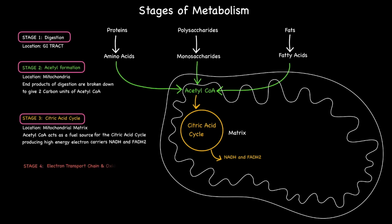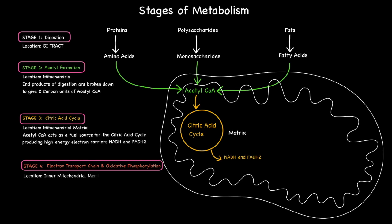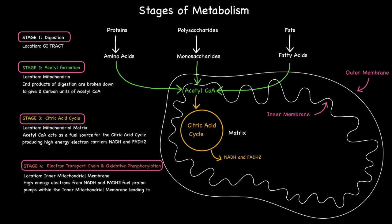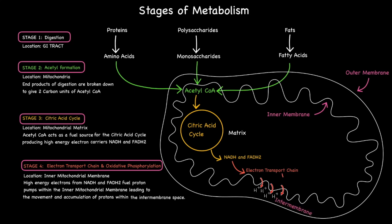Finally, during stage four, these high-energy electrons fuel proton pumps located in the electron transport chain within the inner mitochondrial membrane. This leads to the accumulation of protons within the inter-membrane space, establishing an electrochemical gradient, which is subsequently used to generate ATP in a process termed oxidative phosphorylation.